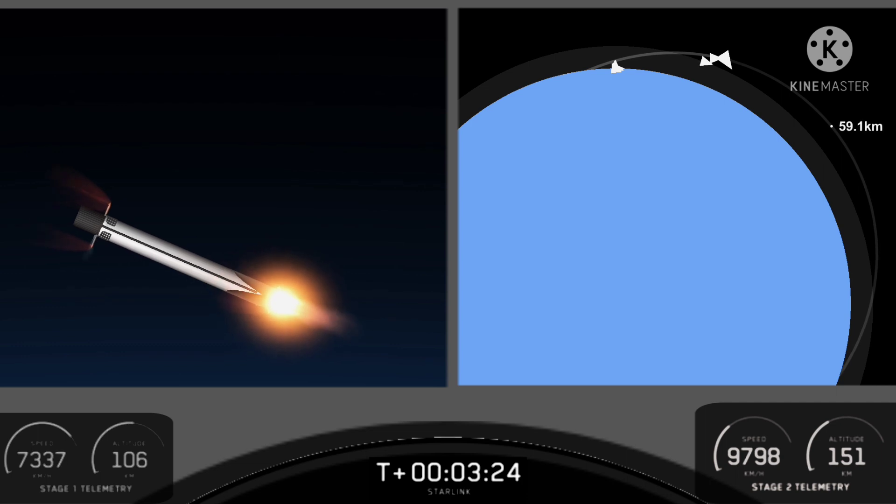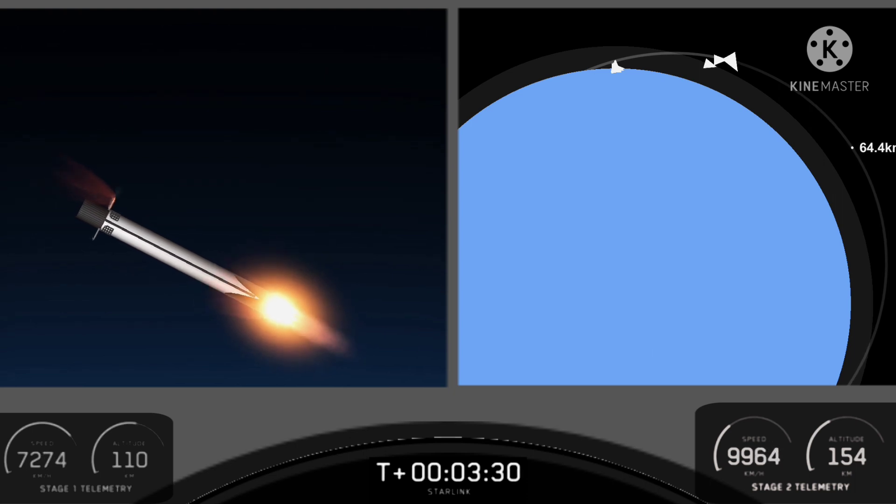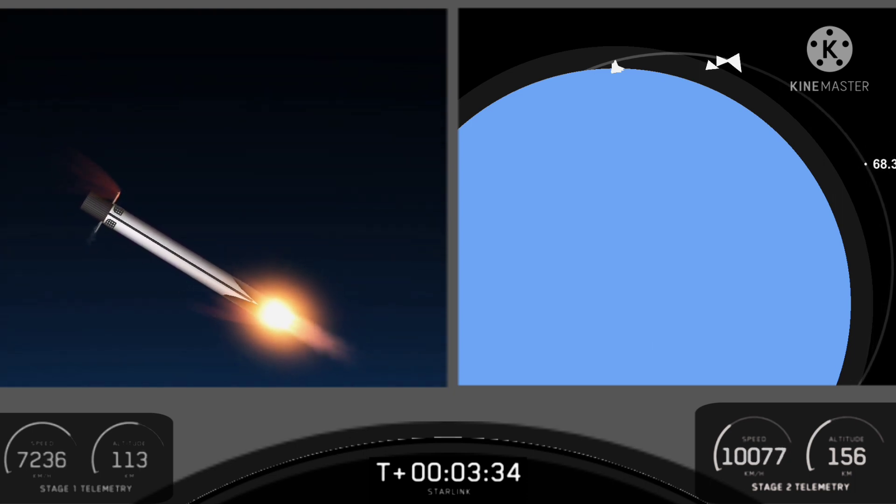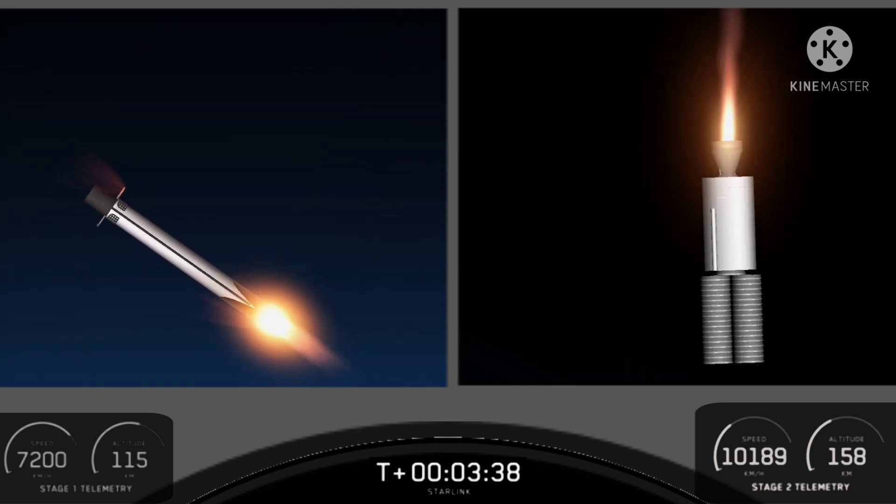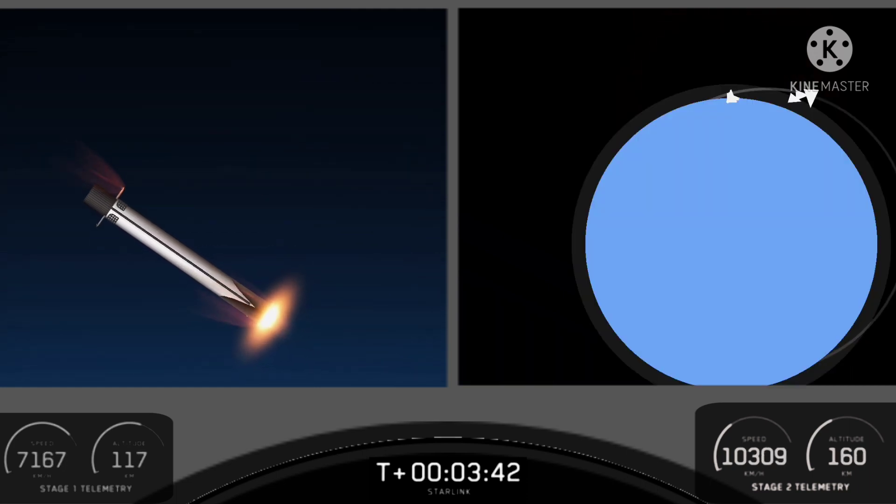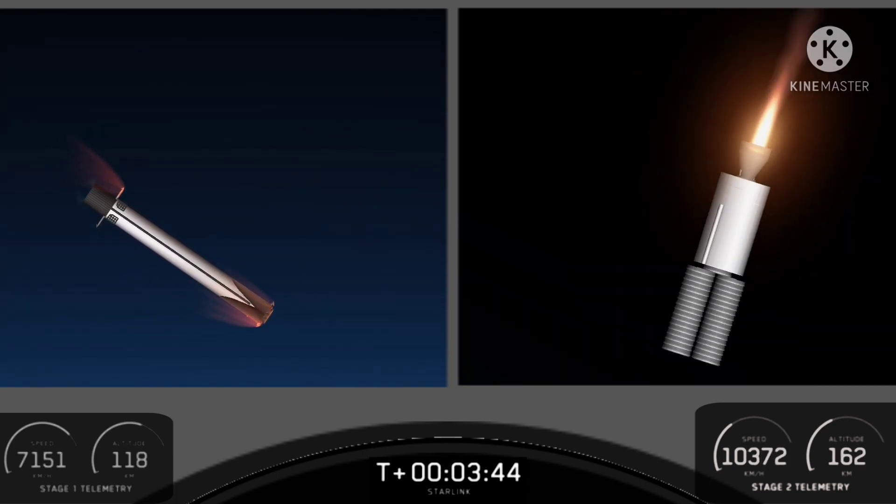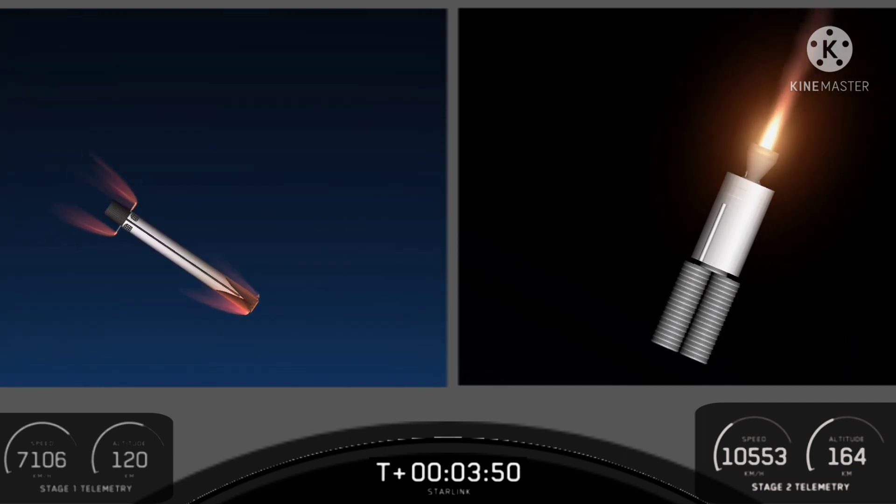As expected, we got some phenomenal footage of ascent. A couple of views on screen right now. On the left-hand side of the screen is the first stage, a view from the top looking down. It's heading back to our drone ship in the Pacific Ocean. On the right-hand side of the screen is a view of that Merlin vacuum engine glowing red hot, continuing to carry our stack of Starlink satellites to low Earth orbit.